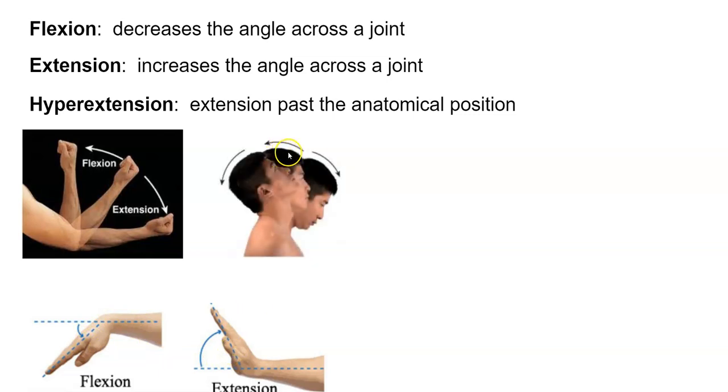Now when this person's head goes forwards, that's flexion. You can see the angle decreasing here. When they bring their head back to anatomical position, that's extension. And if they go back past the anatomical position, that's hyperextension.